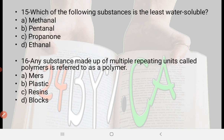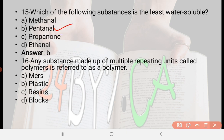Next: Which of the following substances is the least water soluble? Option A: methanol, option B: pentanal, option C: propanone, option D: ethanol. The right answer is option B, pentanal. The substance that is least water soluble is pentanal.